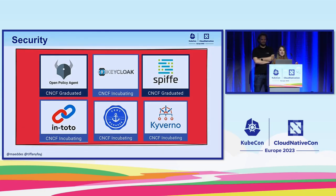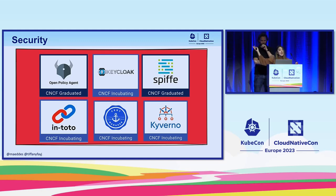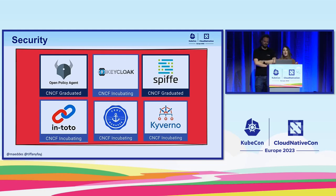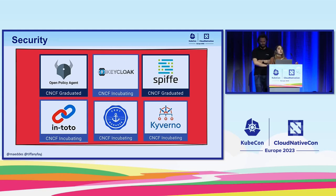For security, there's Open Policy Agent (OPA) and Kyverno, which are for policy-based control. There's cert-manager, which is very self-explanatory — it deals with managing certificates. There's Keycloak for identity, access, and management (IAM). There's SPIFFE and SPIRE, which go hand in hand for identity control plane across infrastructure. There's also In-toto for supply chain integrity — thinking back to that GitSecOps slide with all those locks along the path from code to build — all those hardening steps along the chain, with tools to help you go through them.